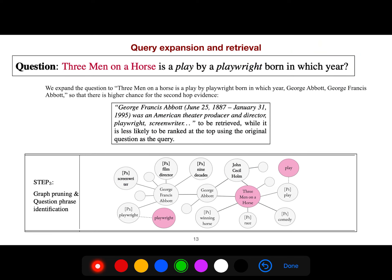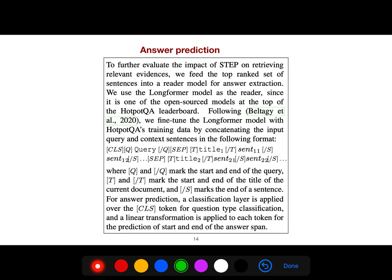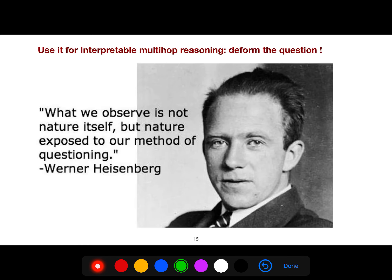Then we have the final step: query expansion and retrieval. We expand the question to 'three men and a horse is a play.' We are expanding the question and then we do graph pruning and question phrase identification. To further evaluate the impact of STEP in retrieving relevant evidences, we feed the top-ranked set of sentences into a reader model for answer extraction.